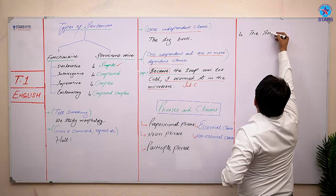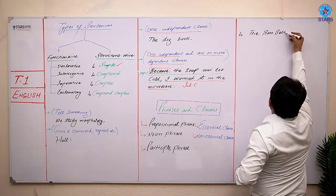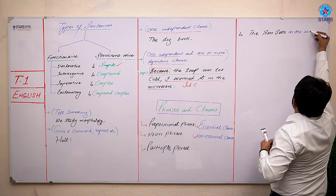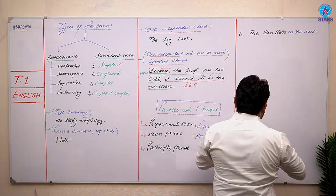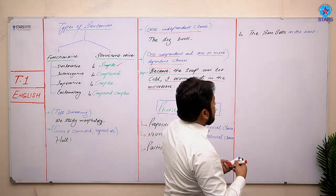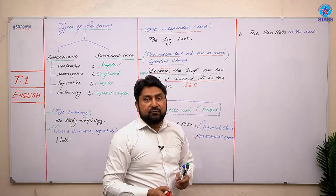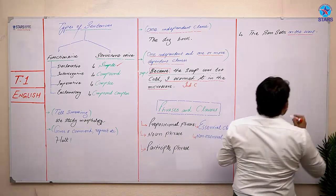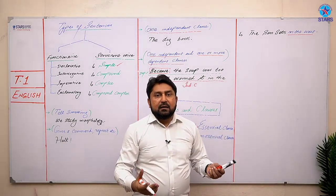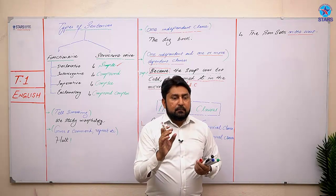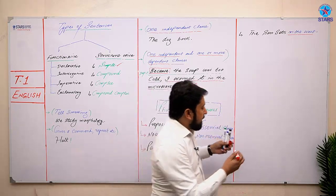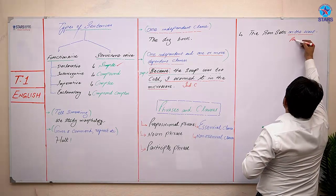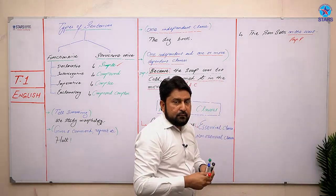'The sun sets in the west.' Dear student, this is a statement and we have to identify the prepositional phrase in this expression. The prepositional phrase is 'in the west.' Agar aap ise akele padhein — 'in the west' — toh yeh ek isolated type of group of words hoga. Isliye hum ise poore sentence ke saath milkar padhte hain, tab complete sense milta hai. Yeh prepositional phrase hai.